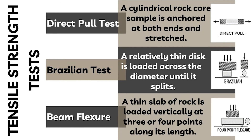Tensile strength tests include: Direct pull tests, where a cylindrical rock core sample is anchored at both ends and stretched. Brazilian tests, where a relatively thin disc is loaded across the diameter until it splits. Beam flexure, where a thin slab of rock is loaded vertically at three or four points along its length.